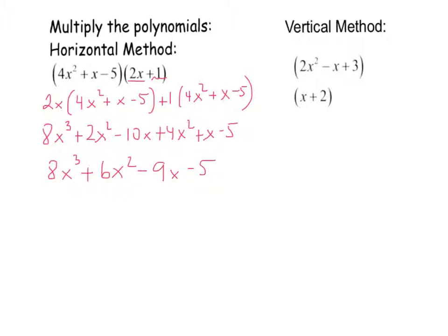When using the vertical method I am going to multiply similarly to the previous method. First I am going to choose my x and multiply every term by the x of my top polynomial. So I get 2x to the 3rd, then x times 2x squared, then x times negative x is negative x squared, and x times 3 is 3x.